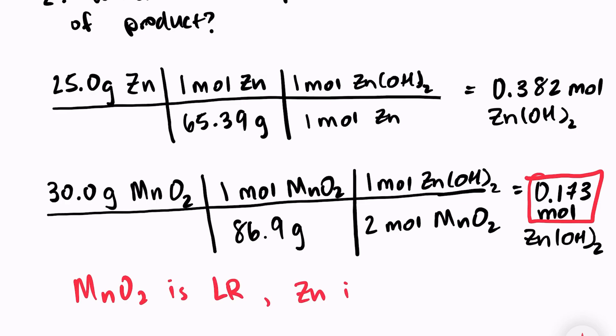MnO2 is the limiting reactant. Zinc is in excess. So zinc has the potential to create 0.382 moles of zinc hydroxide but the problem is that we would run out of MnO2 before we got to that point. So because we will run out of MnO2, we can only produce 0.173 moles of zinc hydroxide.